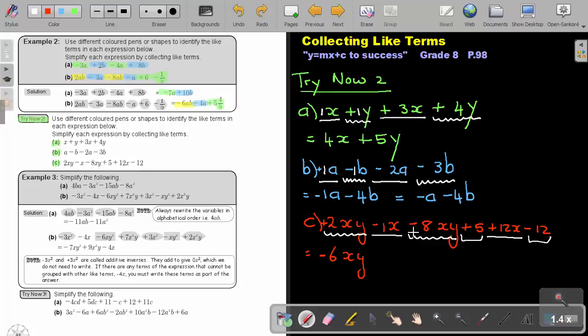And then remember there's a 1. So negative 1 plus 12, the signs are again different. So what do I do? I subtract, so I get 11. And the biggest movement was positive, so positive 11x.